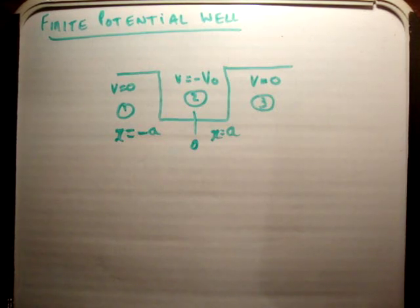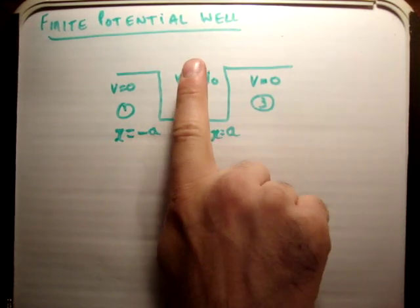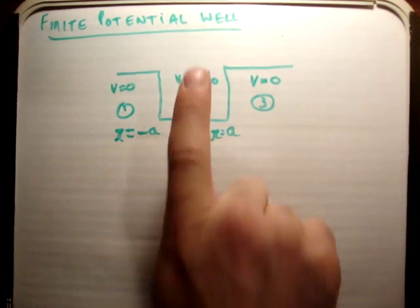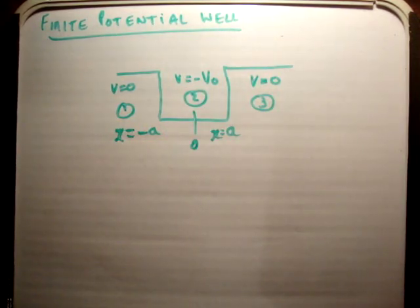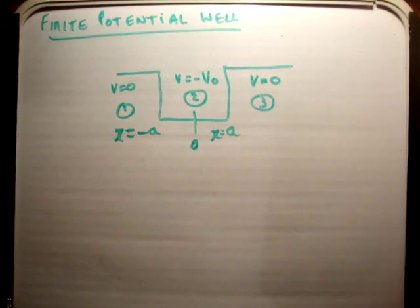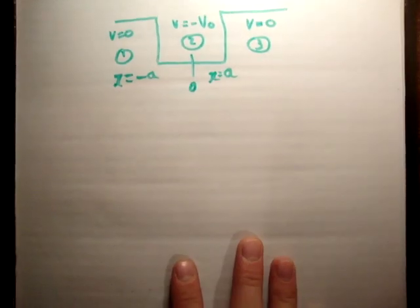That should be ringing symmetry bells in your head straight away. Essentially what we're going to do later on is see that this is symmetric around the origin, and because it is symmetric you're going to get symmetric wave functions — that's going to be even functions. But I won't talk about that now.